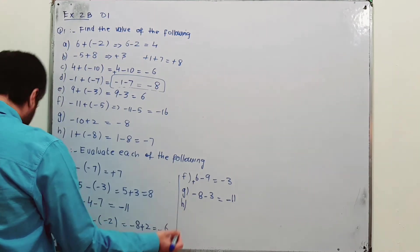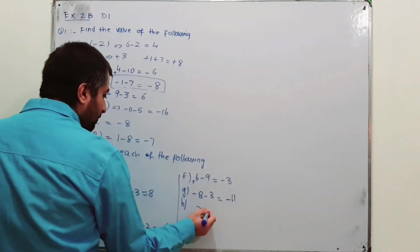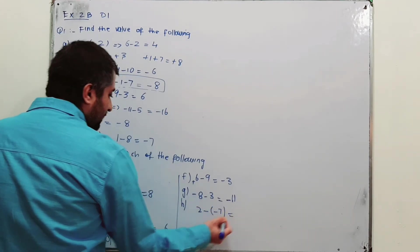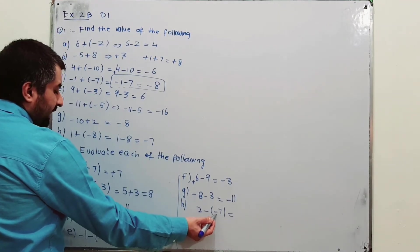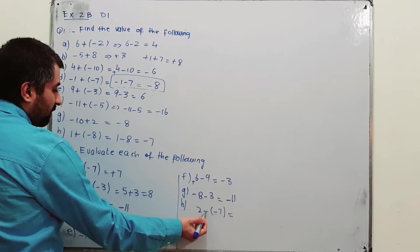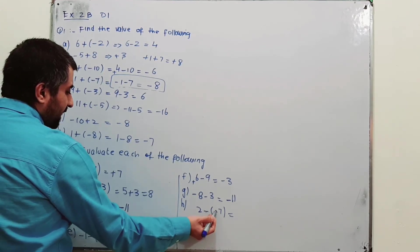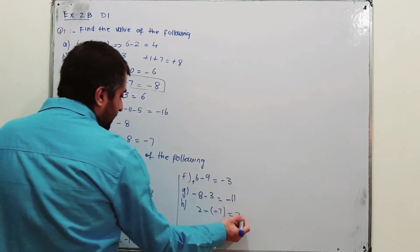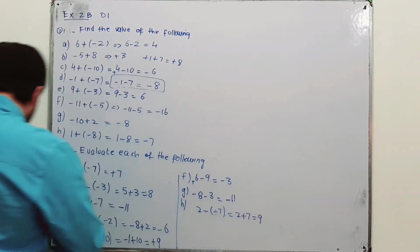Part H: 2 minus (minus 7). When you open the brackets, the minus inside and minus outside are multiplied — minus times minus becomes plus. So 2 plus 7 gives 9.